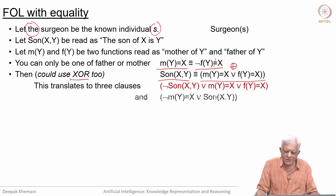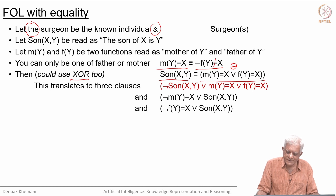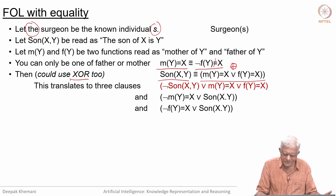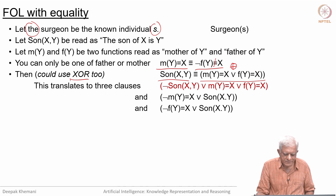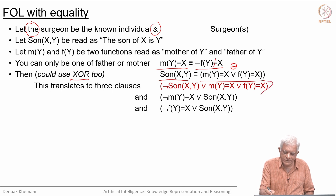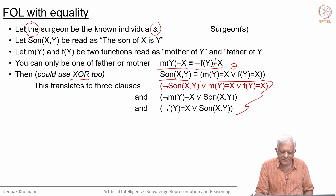When you convert this into clause form, we get three clauses, out of which we will only use the one in red, which says that son(x, y) implies x is the mother of y or x is the father of y. You must do this exercise to verify that.